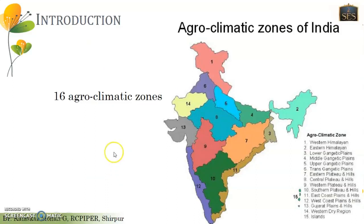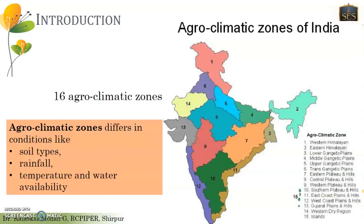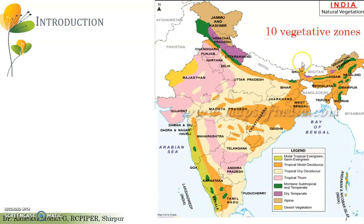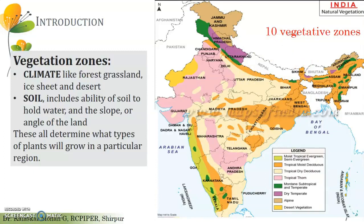India has 16 agro-climatic zones. Agro-climatic zones are defined by a combination of soil type, rainfall, temperature, and water availability. These zones enable different kinds of plants to grow in different parts of the country, with each zone having typical native plants. Similarly, we have 10 vegetative zones, which are a combination of specific climate and soil. Climate includes forest land, greenland, grasslands, ice land, and deserts, while soil factors include water holding capacity and slope. These 10 vegetative zones also have the specificity to grow specific medicinal plants.